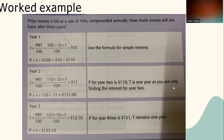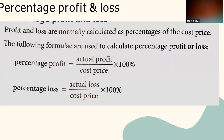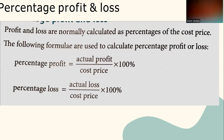Percentage profit and loss: profit and loss are normally calculated as a percentage of the cost price. The formulas are: Percentage Profit = (Actual Profit / Cost Price) × 100%. Percentage Loss = (Actual Loss / Cost Price) × 100%. You have to remember these formulas.